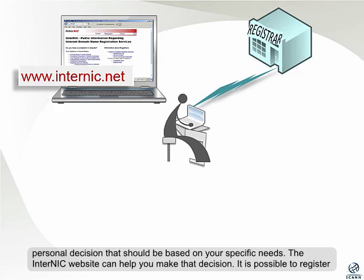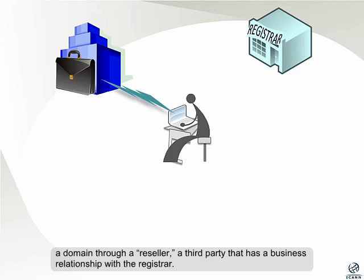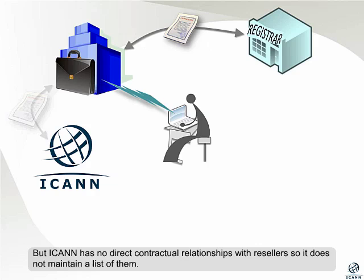It's possible to register a domain through a reseller, a third party that has a business relationship with the registrar. But ICANN has no direct contractual relationships with resellers, so it does not maintain a list of them.